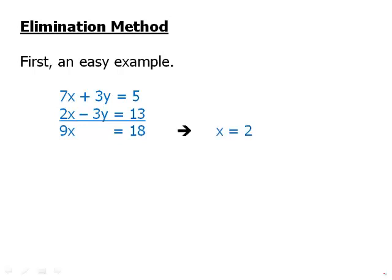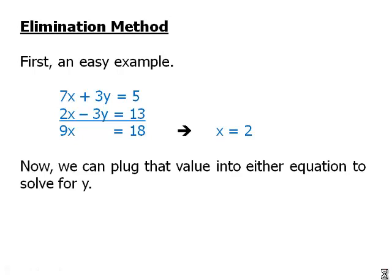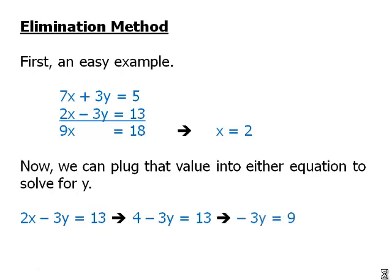That's very easy to solve. Divide by 9, and we get x equals 2. Now we can plug that value into either equation and solve for y. Let's plug it into the second equation — it looks a little friendlier. Plug in x equals 2, so we get 4 minus 3y equals 13. Subtract 4, divide by negative 3, and we get y equals negative 3. So x equals positive 2, y equals negative 3 is the solution to that system.